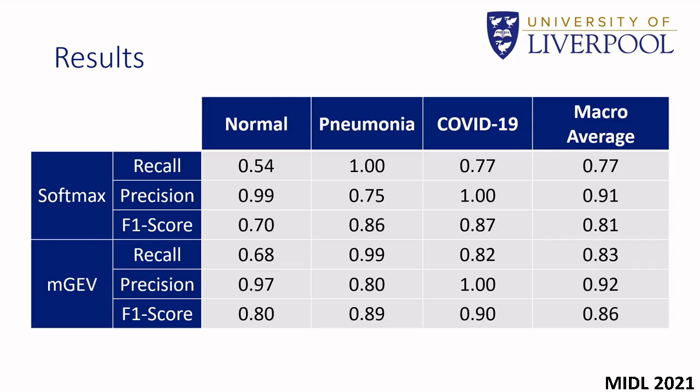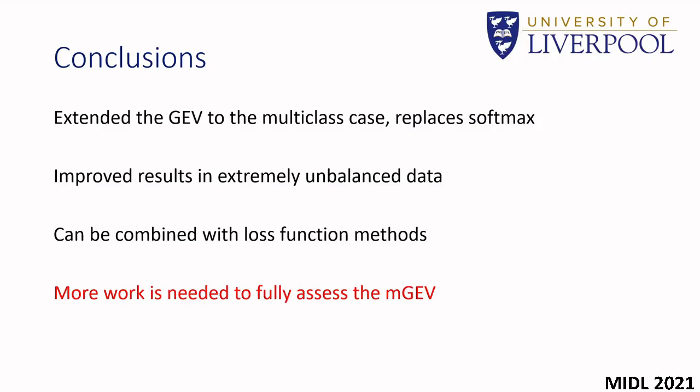This suggests that the MGEV is better suited to unbalanced data than the Softmax activation. We have extended the GEV activation function to the multi-class case. The MGEV is simple to implement, just replacing the Softmax activation. On a set of highly unbalanced data we found improved results over Softmax activation. The method can easily be combined with loss function methods.